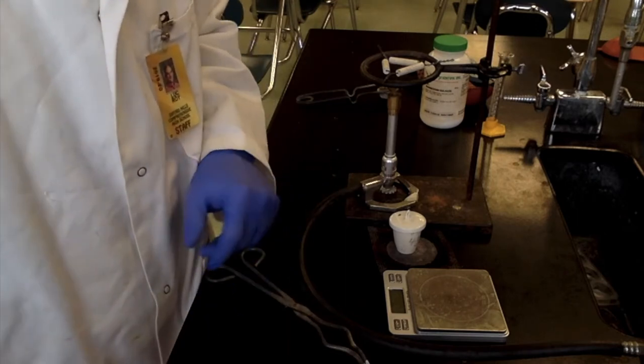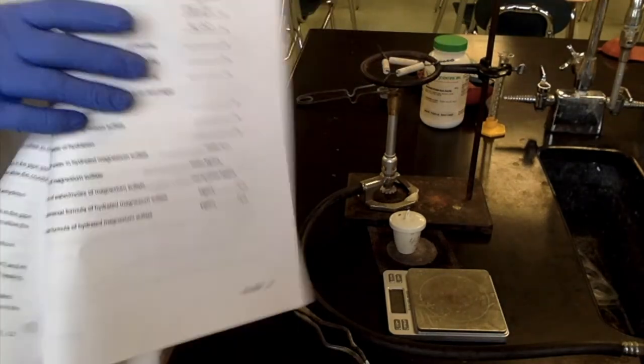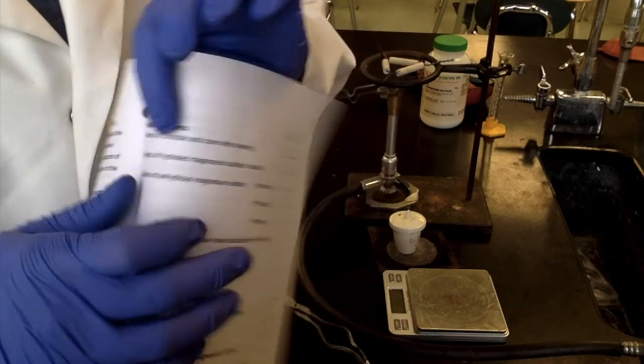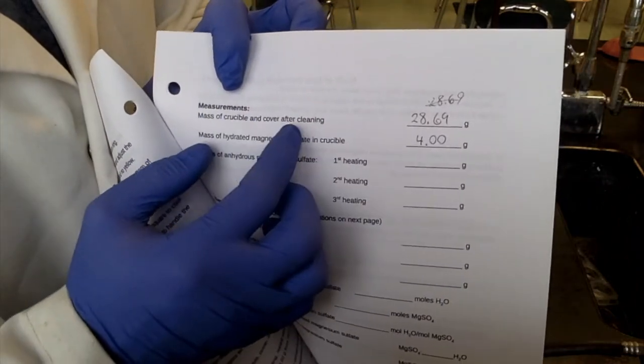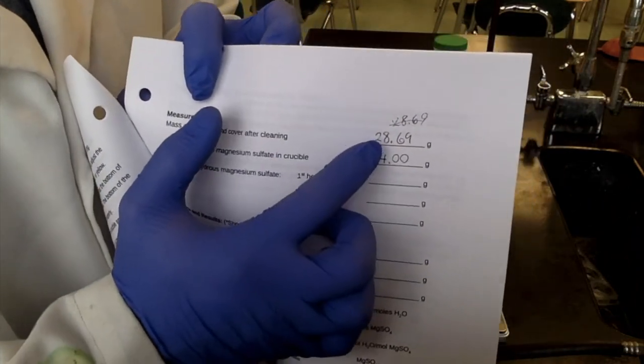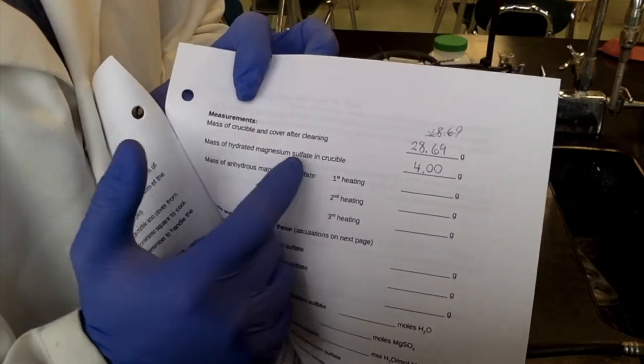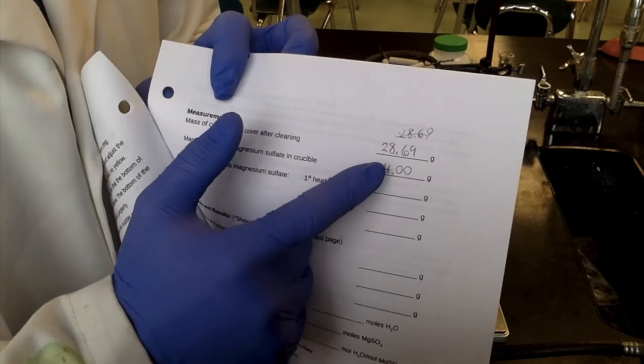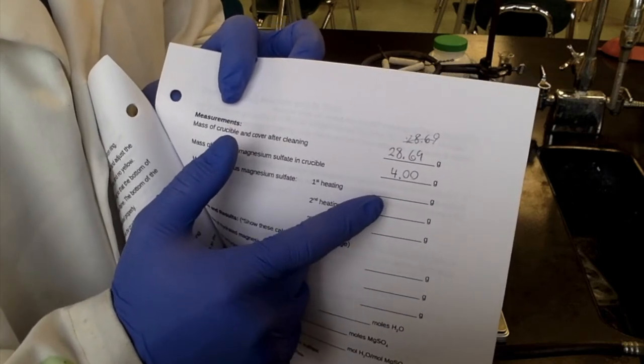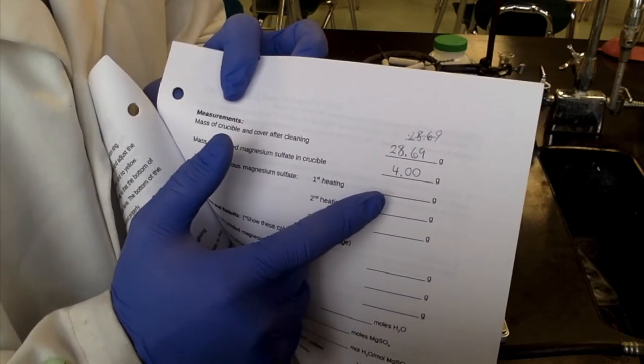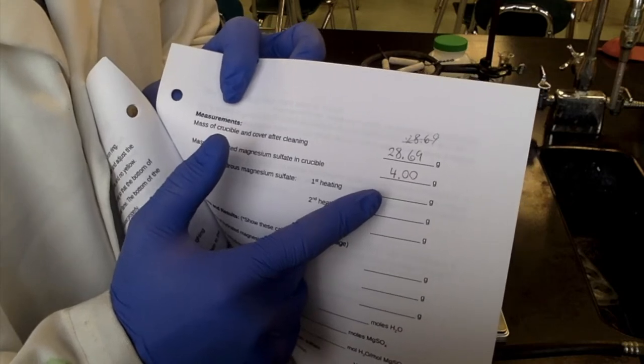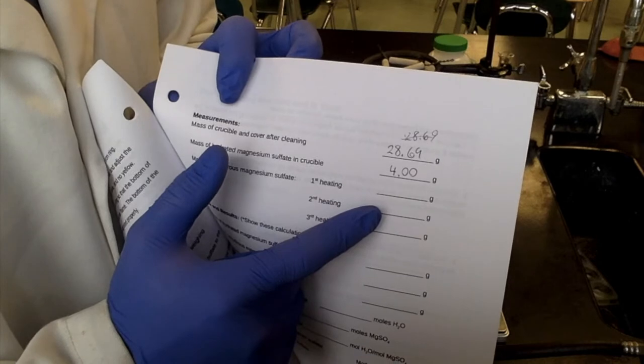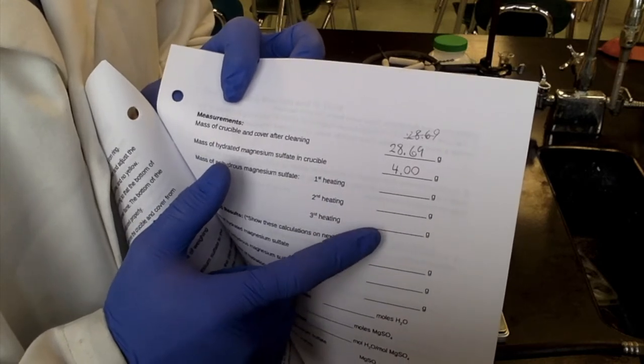And that's going to sit there and cool for another five to 10 minutes, before you can get an accurate mass measurement. Just to review the measurements we've taken so far, we had measured the mass of crucible and cover after cleaning at 28.69 grams. And I weighed out the magnesium sulfate to five grams, exactly. So now we're going to see after the first heating, how much the mass has changed and then we'll do a second heating for sure.